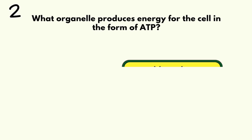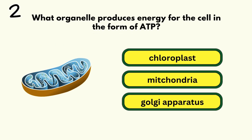Number 2. What organelle produces energy for the cell in the form of ATP? Mitochondria.